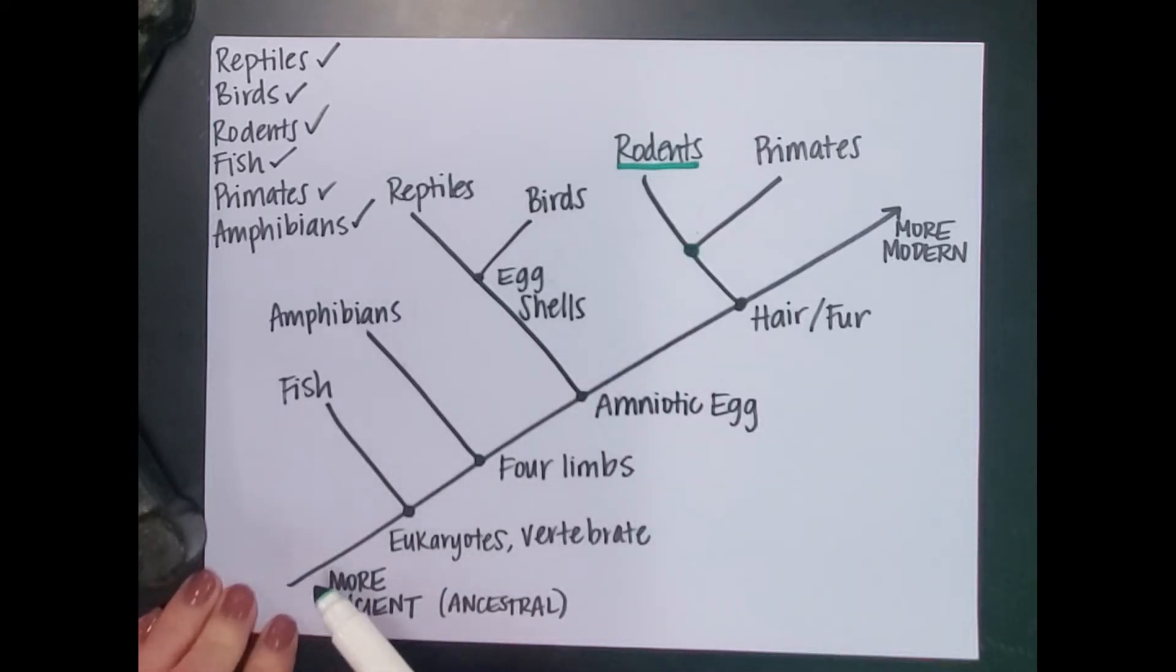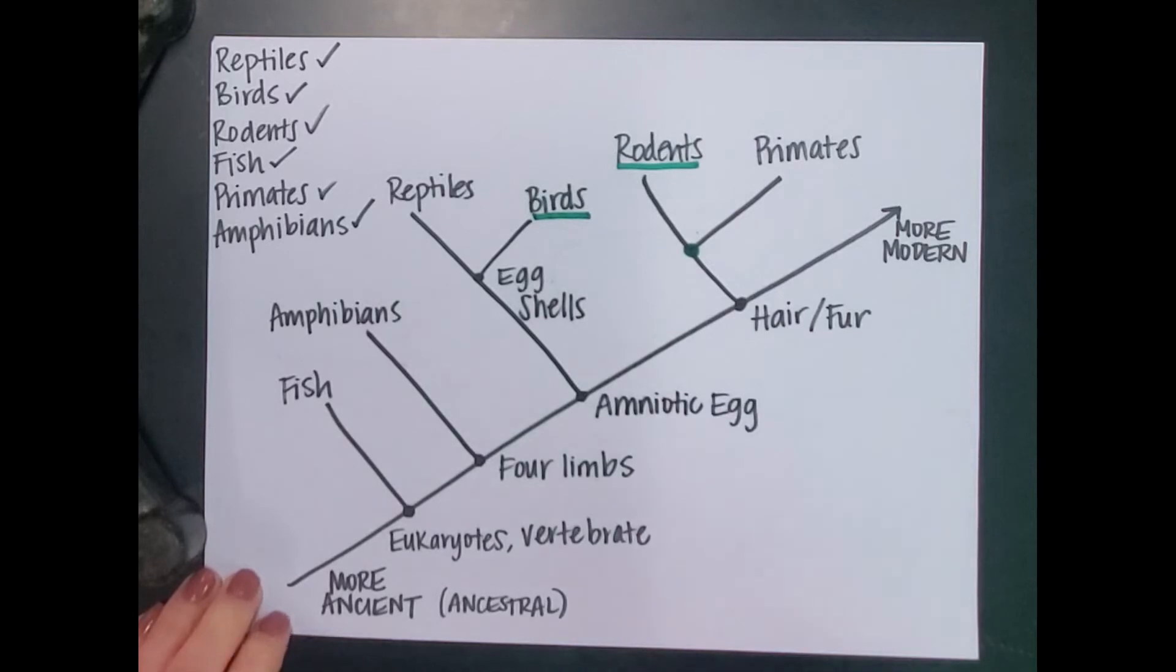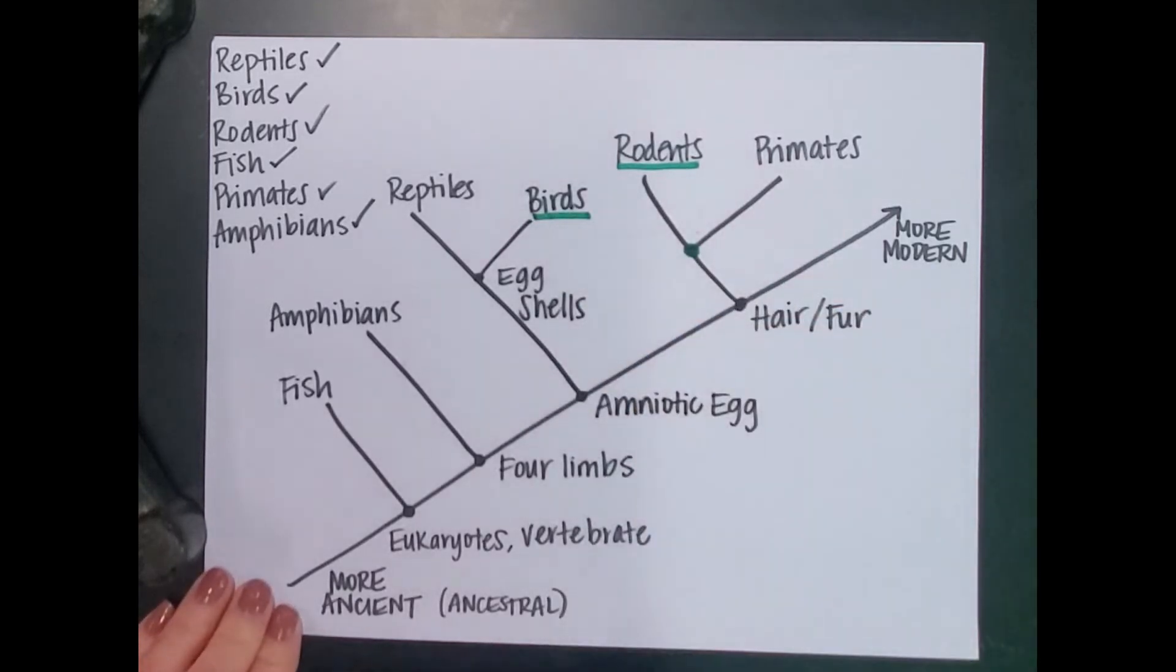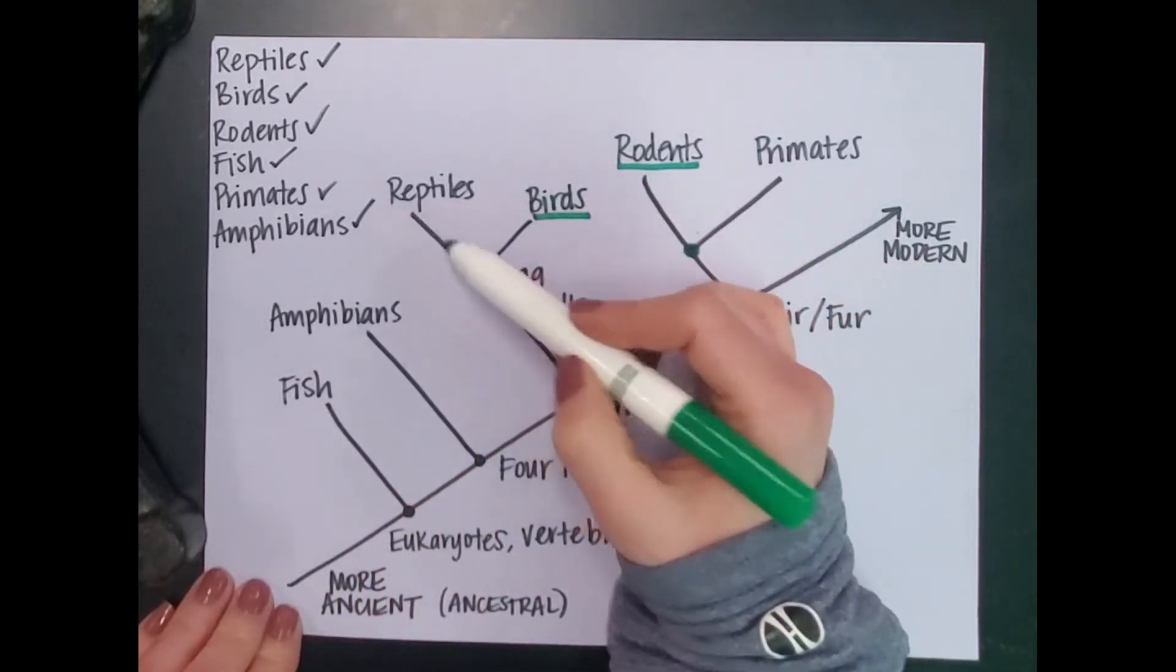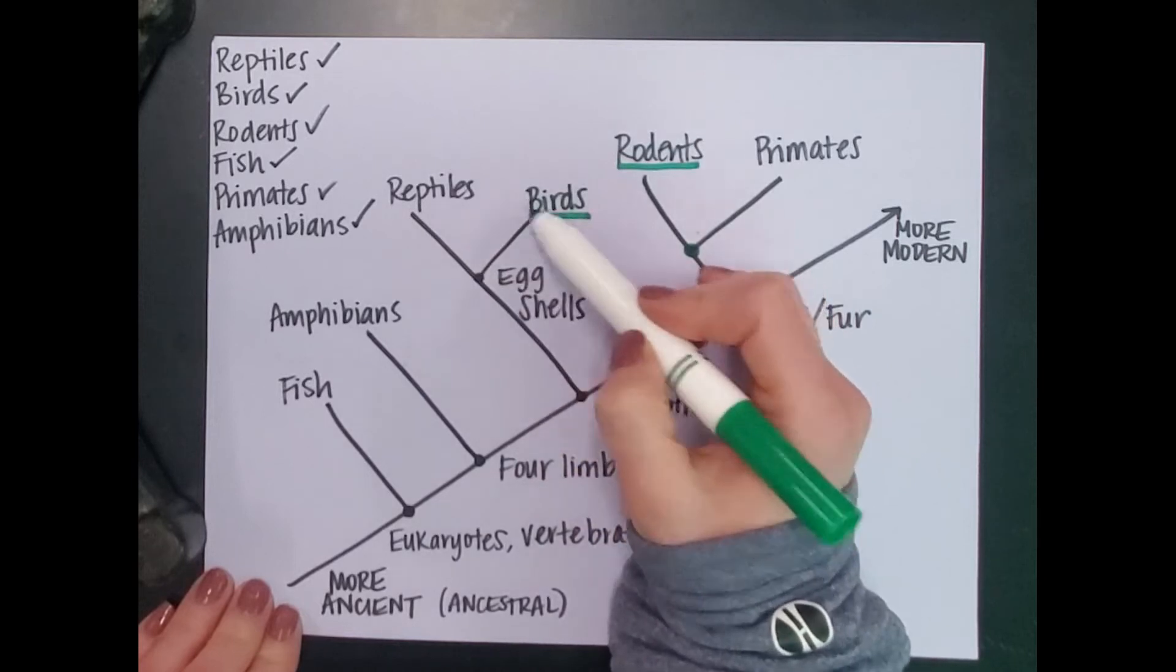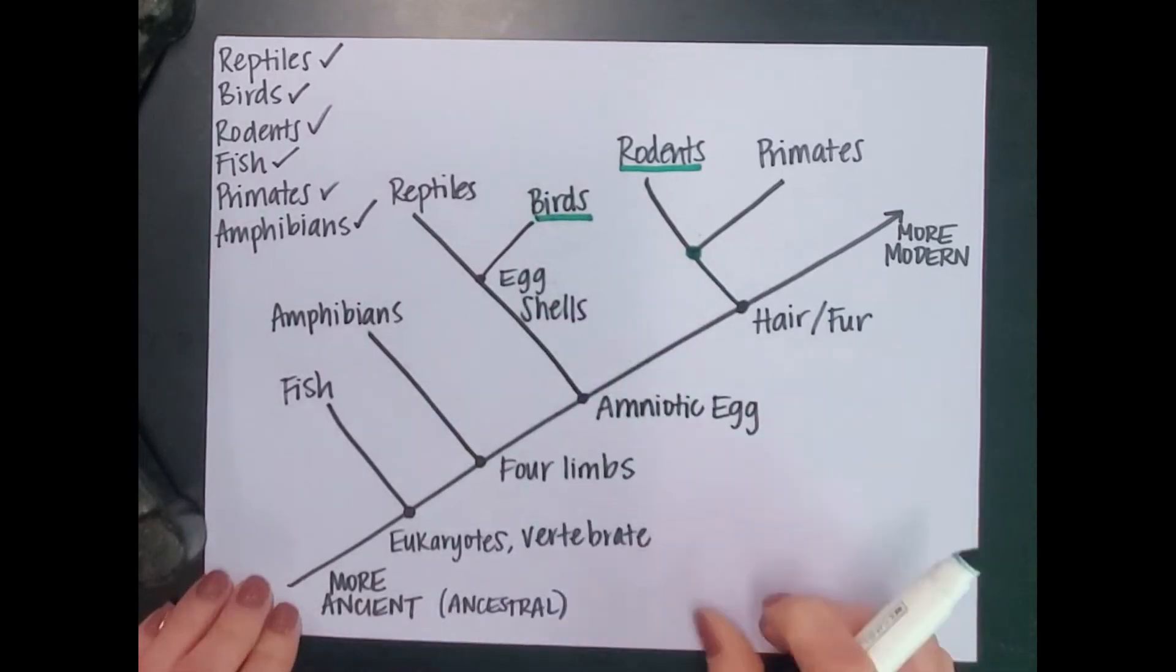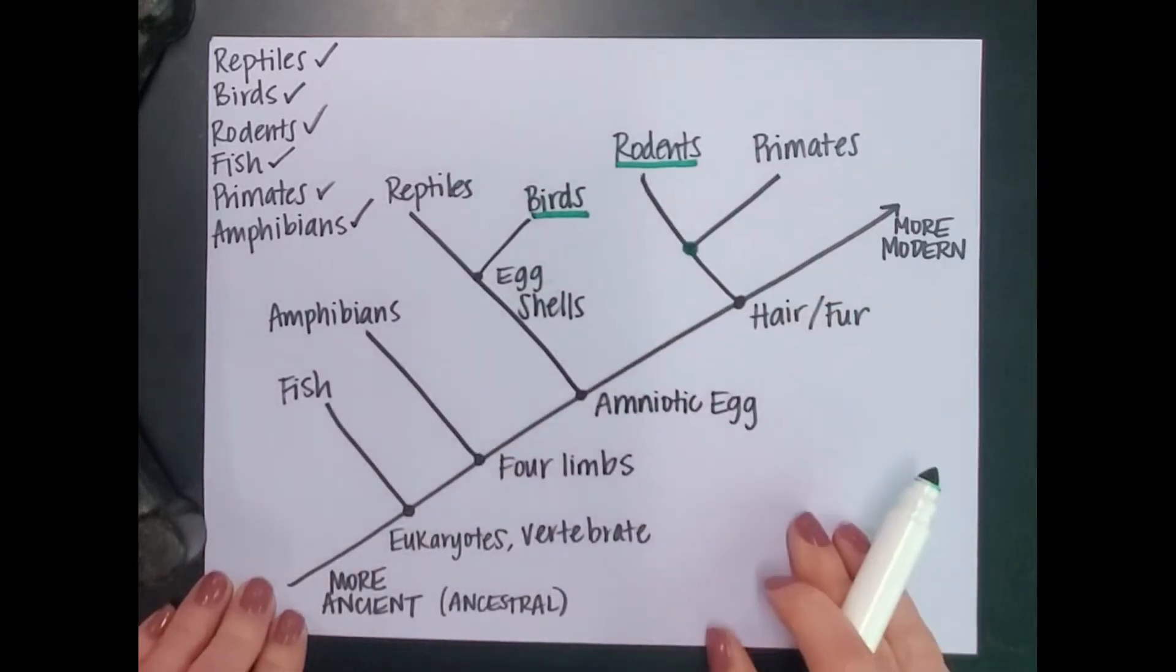If we need to figure out which are most closely related to something else, like for example, what is most closely related to birds? We do this by traveling backwards. From birds, where is the next closest physical written word? We look down here, eggshells. Now reptiles share that characteristic with birds, and they're the closest on this cladogram. So reptiles are most closely related to birds because they have all the same characteristics, and they're grouped close on the cladogram.